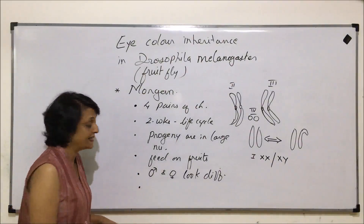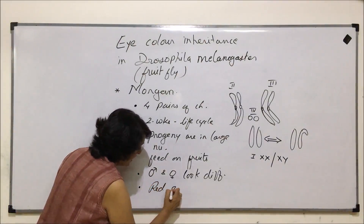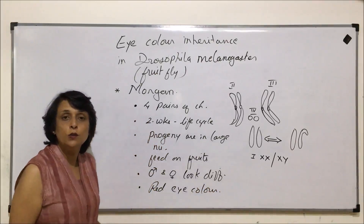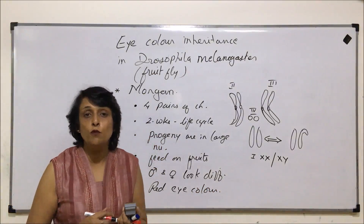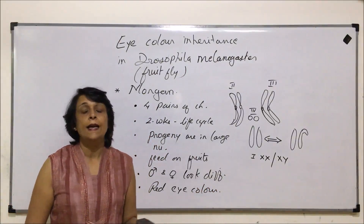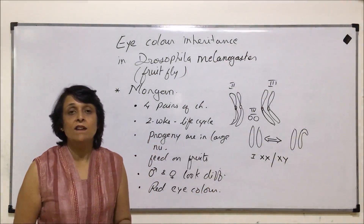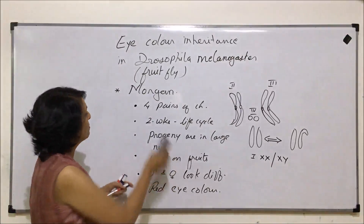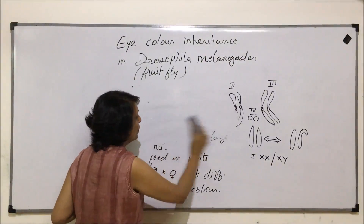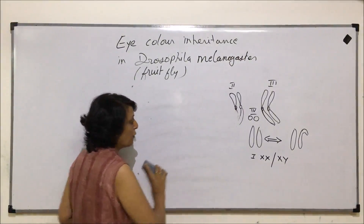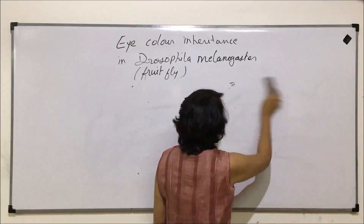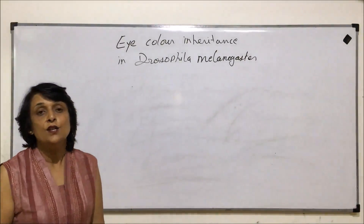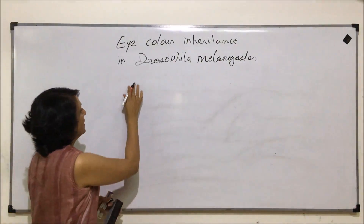The female is bigger compared to the male. The normal eye color in Drosophila is red. When Morgan was working with these fruit flies he found one white-eyed male — there was a mutation which resulted in the formation of a white-eyed male. This is our starting point as we talk about eye color inheritance.